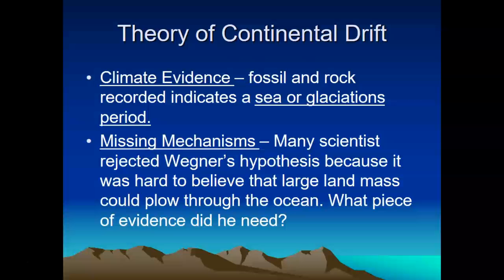Climatic evidence is another great example. We can look at glacier periods and see that they've all been eroded during the same time period. And finally, there's the missing mechanism — that missing piece that Wegener always needed. Now we kind of have it with technology and knowing how fast the plates are moving.